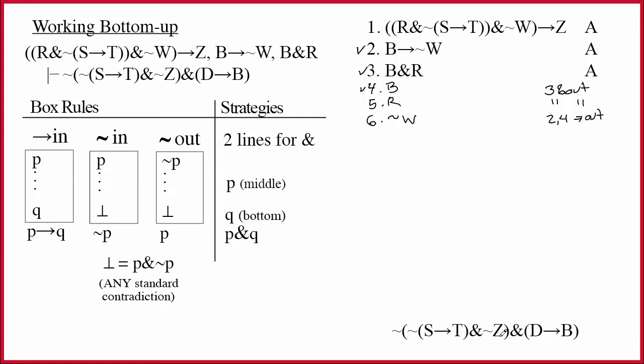What's the main connective? This is kind of an ugly formula. Sometimes people make careless mistakes with things like this. But notice, if you connect the parentheses, you can see that this ampersand is outside the parentheses. So it's the main connective. Well, that tells me I should use the bottom-up strategy that I've called two lines for ampersand. This is a process that we go through, because basically we're looking at this line, and we're saying we have to prove two things. Everything in front of the ampersand and everything after.